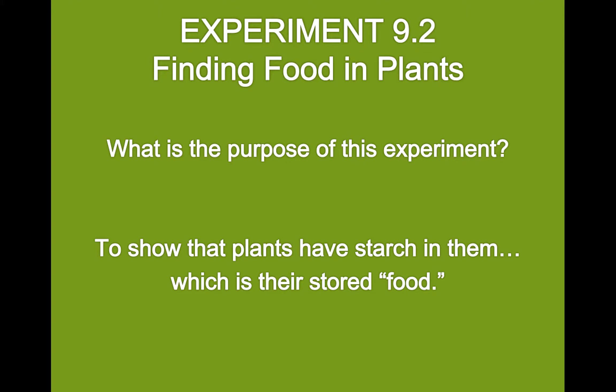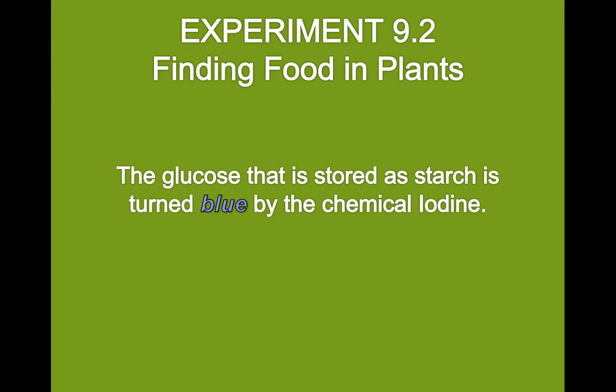What is the purpose of this experiment? The introduction shows us that the purpose is to show that plants have starch in them, which is their stored food. We've learned about photosynthesis and metabolism and how plants store their food that comes out of photosynthesis as starch, and we want to confirm that. We're going to look at this starch, which is the glucose stored by the plant as starch, and that starch gets turned a dark blue color by the chemical iodine. So if something turns blue when we put iodine on it, that confirms it has starch in it, which is the food of plants.